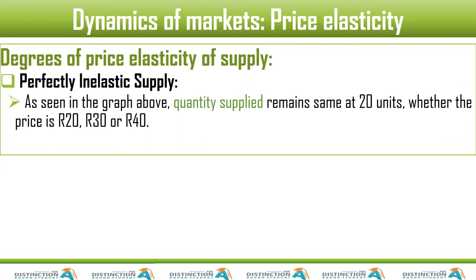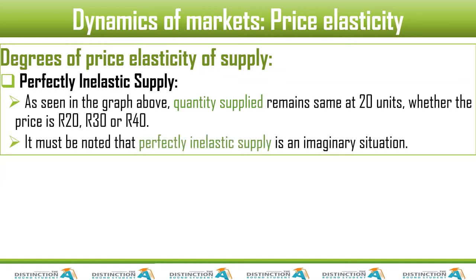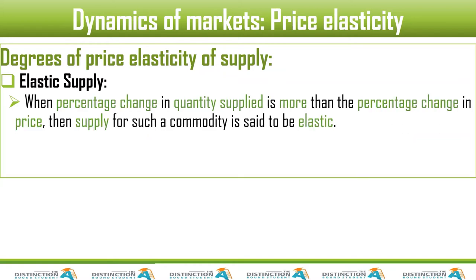As seen in the graph, quantity supplied remained the same at 20 units whether the price went up from 20 to 30 or from 20 to 40 — nothing changed. And as we said with the other one, it is mostly imaginary. Put your comments down below and tell me what your thoughts are.